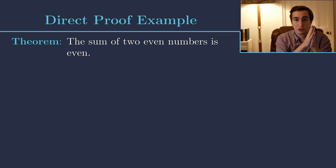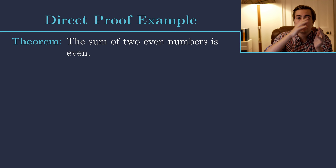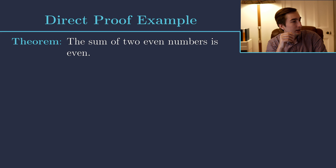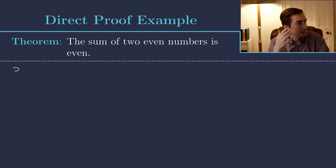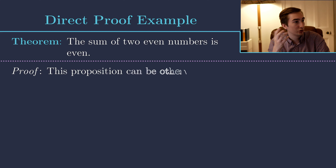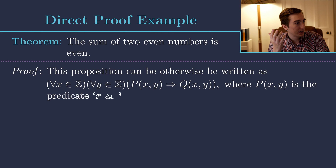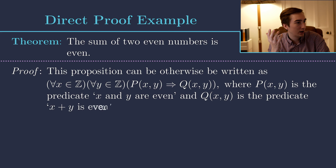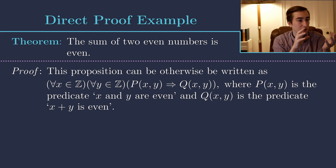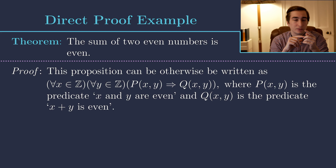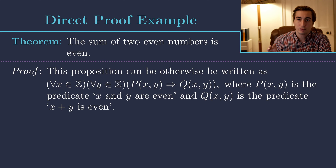Let's look at an example of a direct proof of the form 'p implies q'. The statement is: the sum of two even numbers is even. This is a true statement and we need to prove it. We're working in the context of integers, so we're allowed to use the axioms of the integers from last week's video. For an if-then statement, we start by assuming the left-hand side is true and show that the implication must necessarily hold.